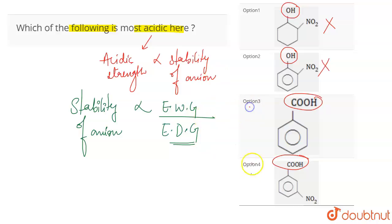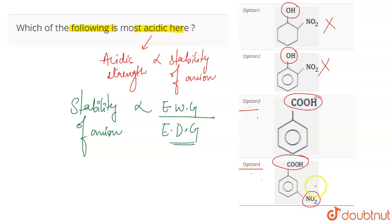The carboxylic group is more acidic. Now options three and four both consist of a carboxylic group. Due to the presence of an electron withdrawing group, the acidic strength is going to increase because it increases the stability of the anion. In benzoic acid, the COOH group on the benzene ring is a meta-directing group, so at the meta position an NO2 group is attached, which is an electron withdrawing group — it is going to increase the acidic strength. So out of options three and four, option four is going to be more acidic, because in option three there is no electron withdrawing group attached.